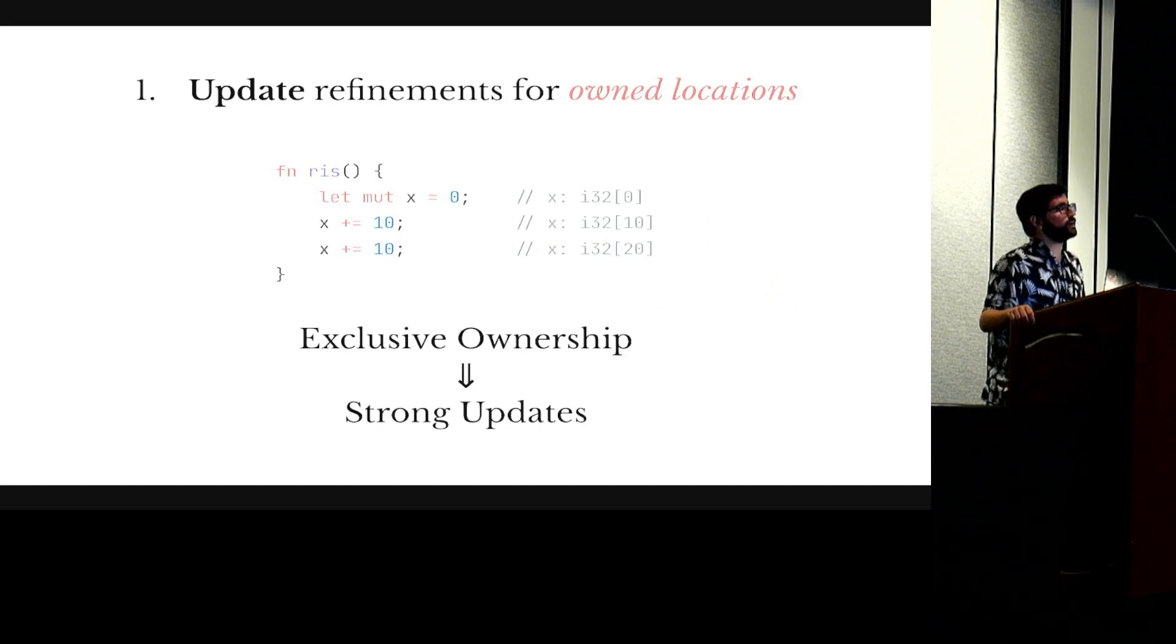In Rust every value has an owner, is owned by a local variable, which means that whenever we update through a variable we know that no other pointer can be accessing that value, which means in the context of refinements that we can do an extra update and change the refinement we have on that value. And this allows us to precisely track properties about the values in different locations. Now ownership is a powerful concept, but any of you that have written some Rust code know that explicitly passing the ownership between functions can become very cumbersome very quickly.